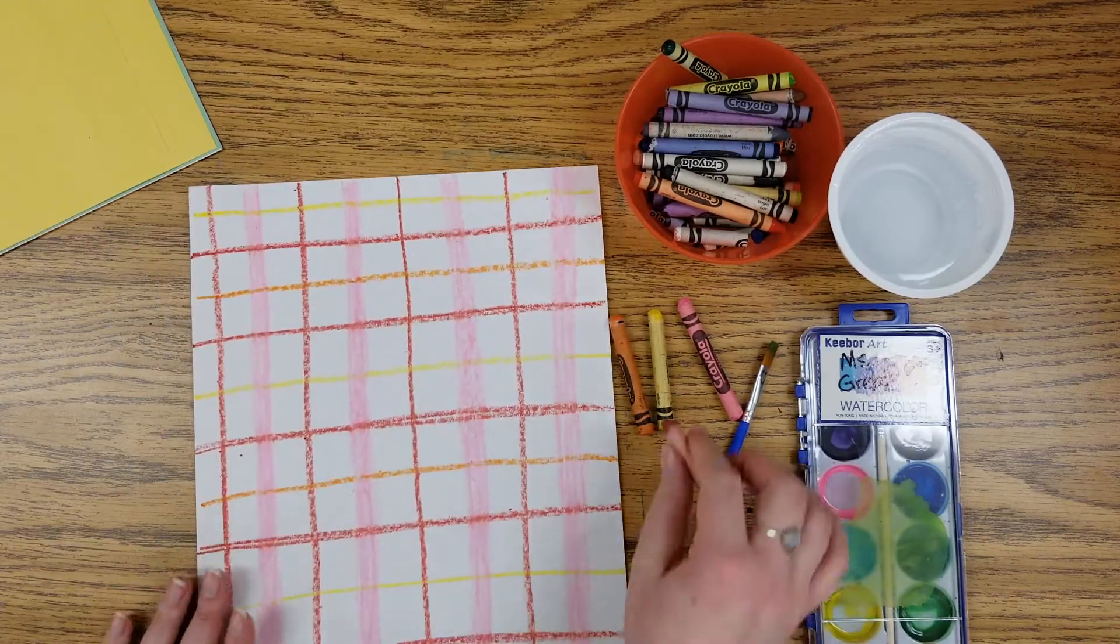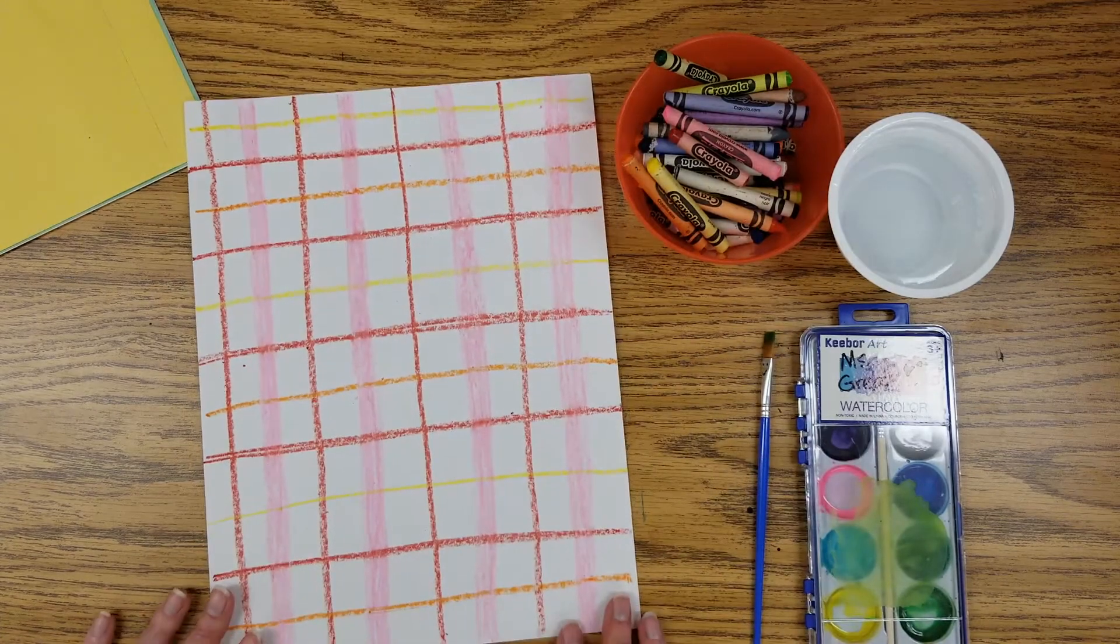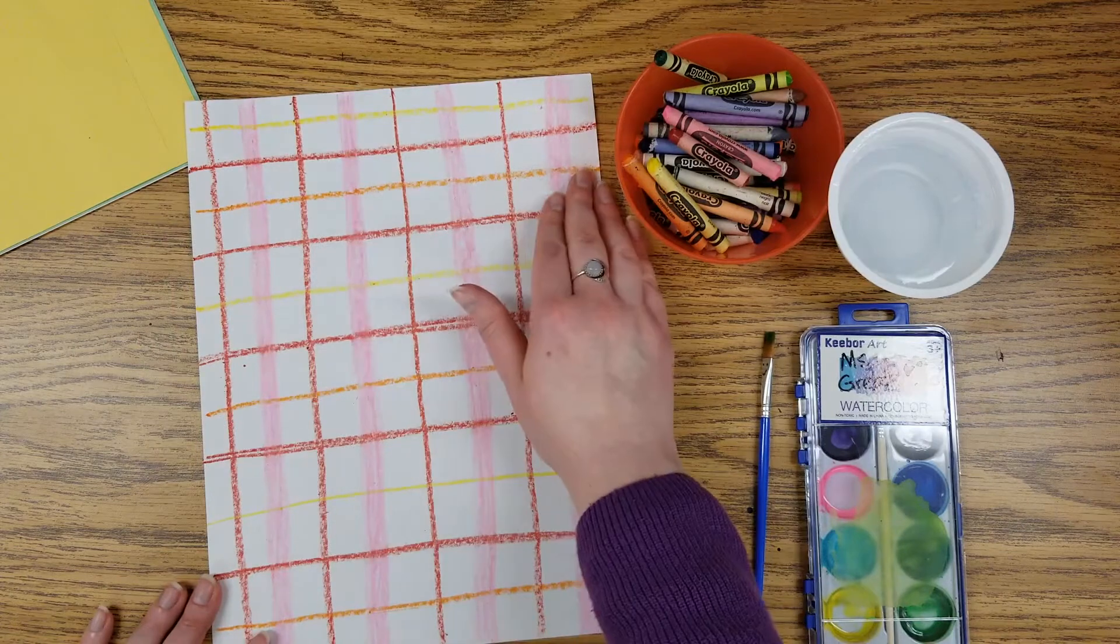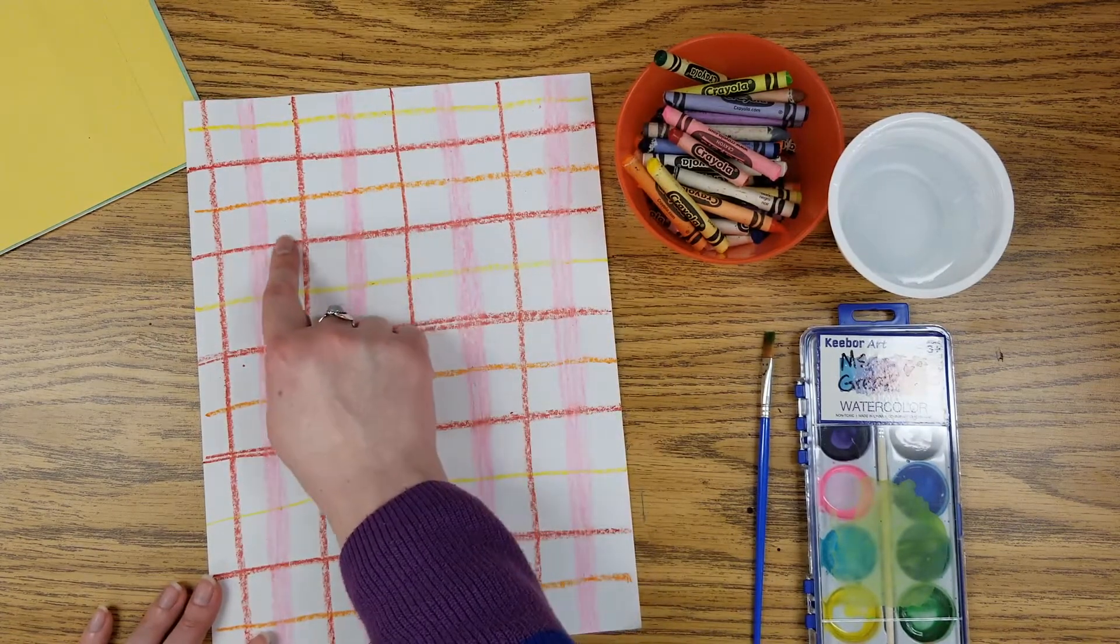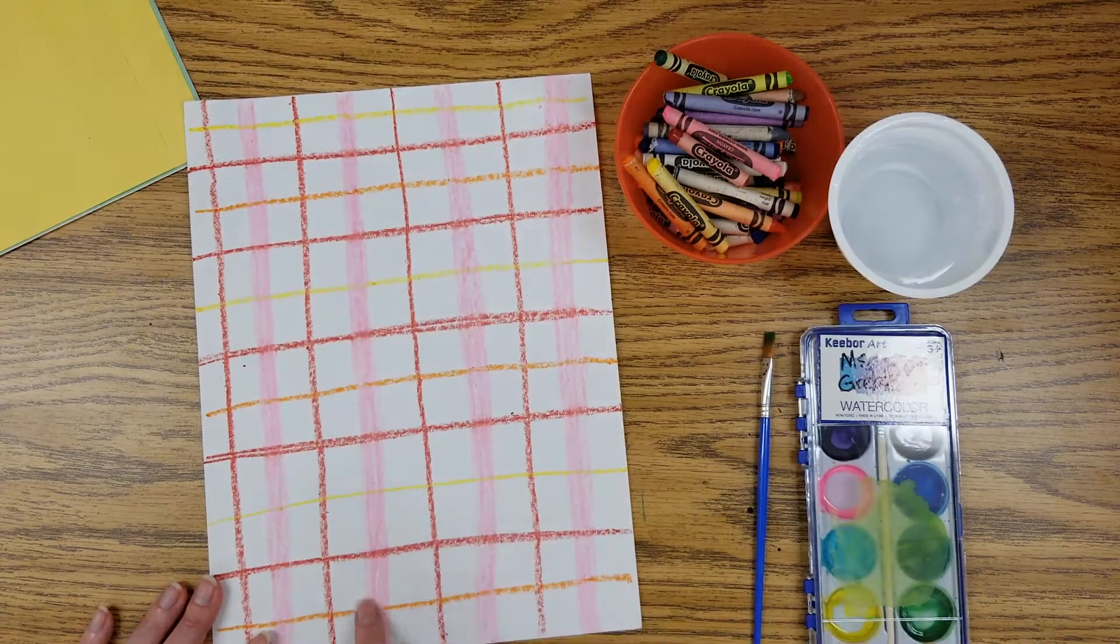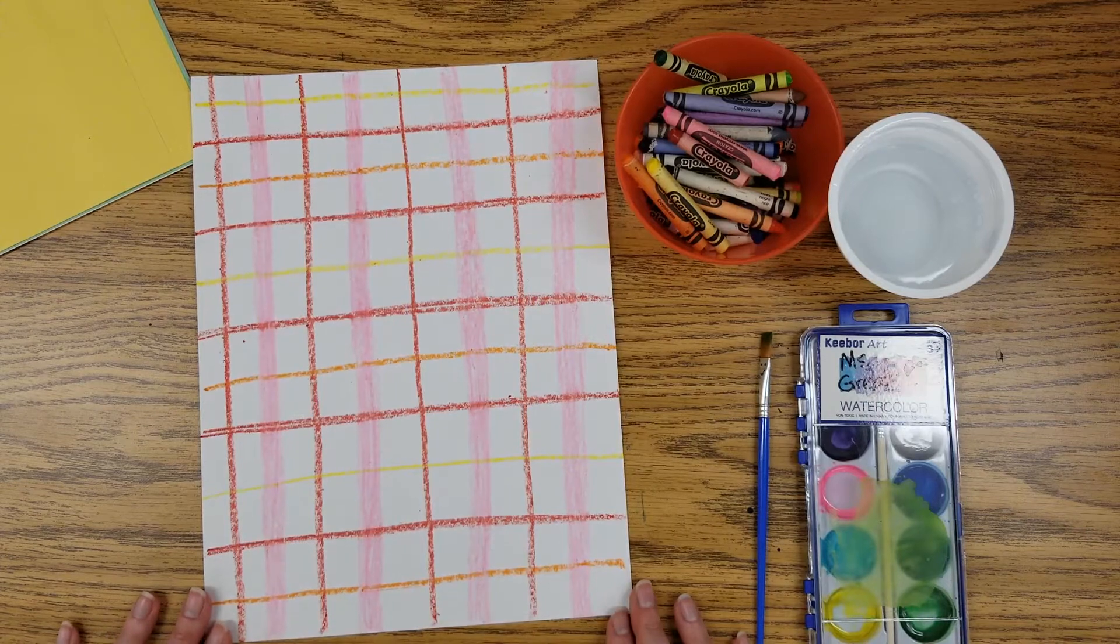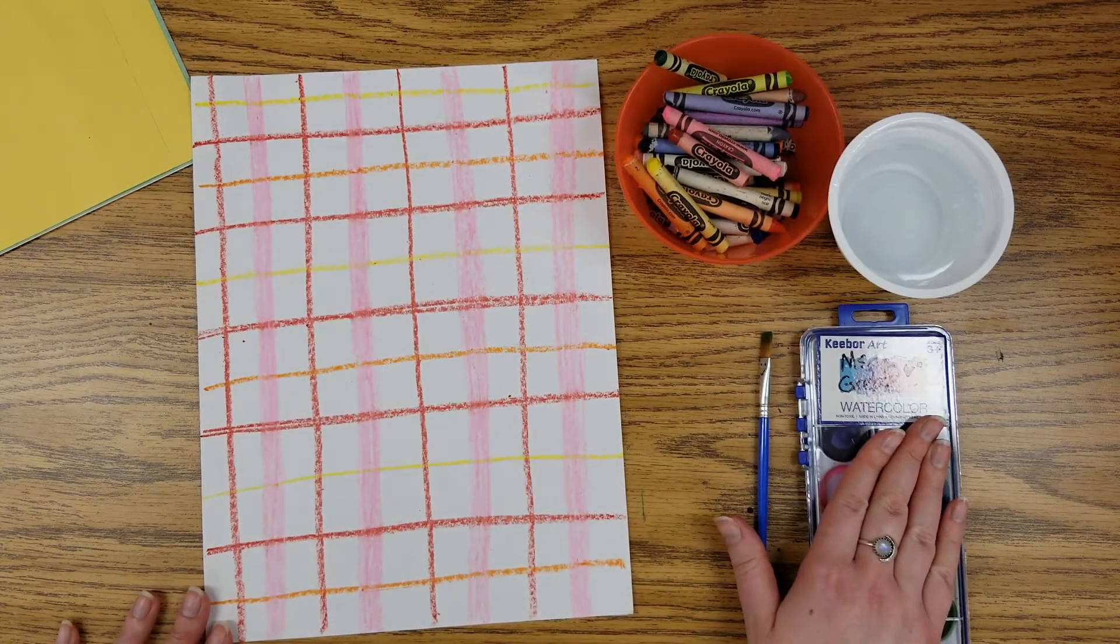So here's the start of my plaid paper, friends. Again, I've only drawn straight lines that go up and down or side to side. And I have both thin and thick lines in my plaid picture. If you need some more time, please pause the video here. Otherwise, it's time to open up our paint set.